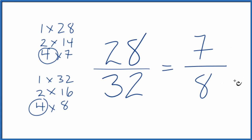We can't reduce this any further. So in answer to our question, 28/32 is equivalent to 7/8. We've simplified it to 7/8. And if you divide 28 by 32 or 7 by 8, you'll get the same decimal answer.